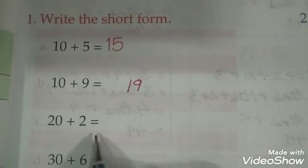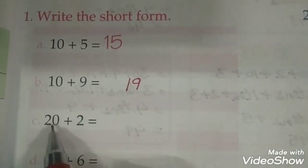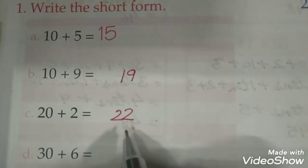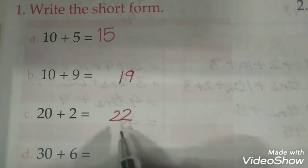20 plus 22. You have 2 tens, 20 plus 2. Again zero hata kar hum aapko answer yahan likhenge, 22. This is the answer, this is the short form. Easy? It's very easy. You just have to understand.